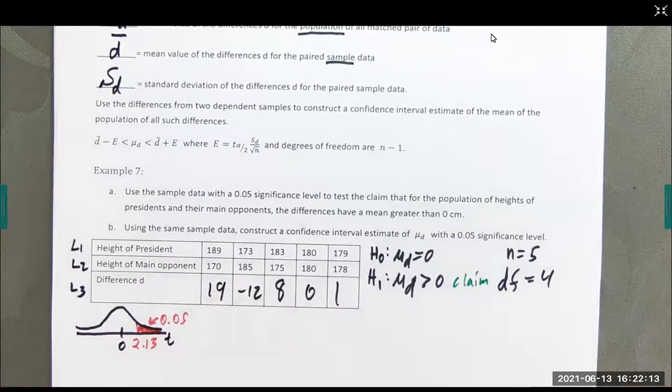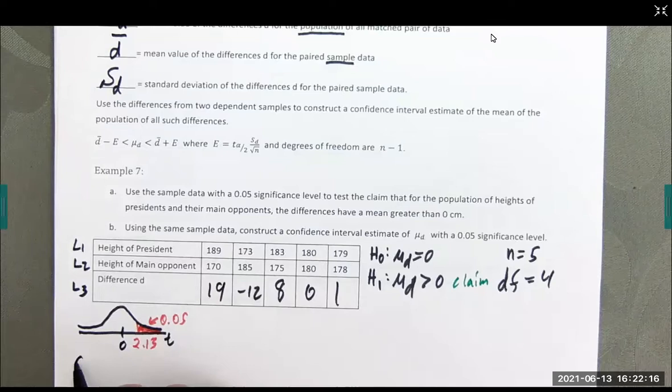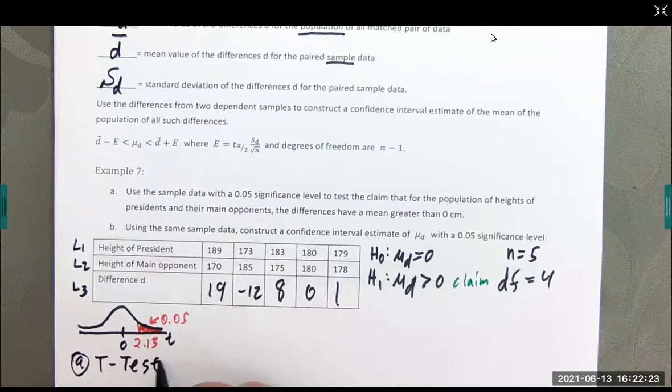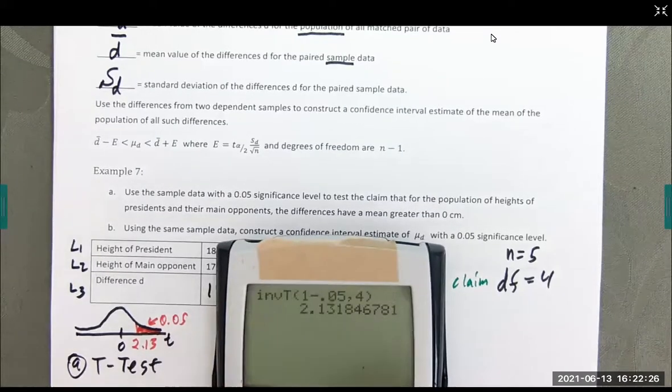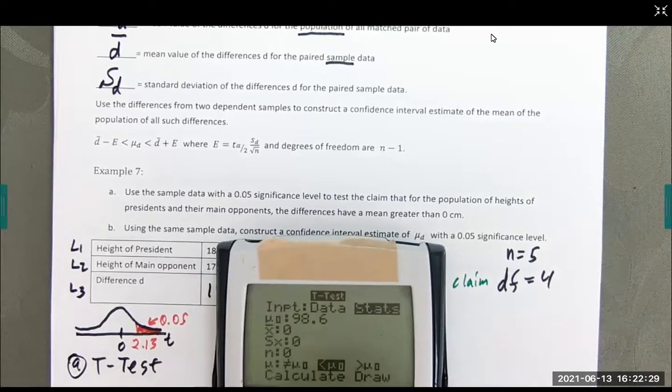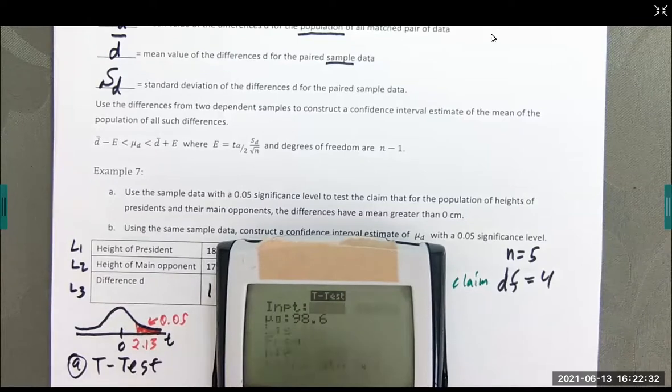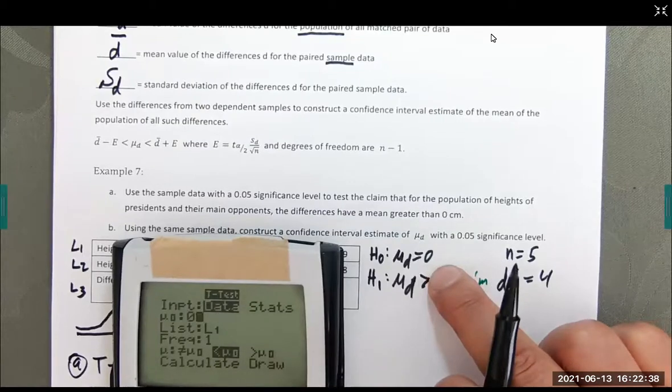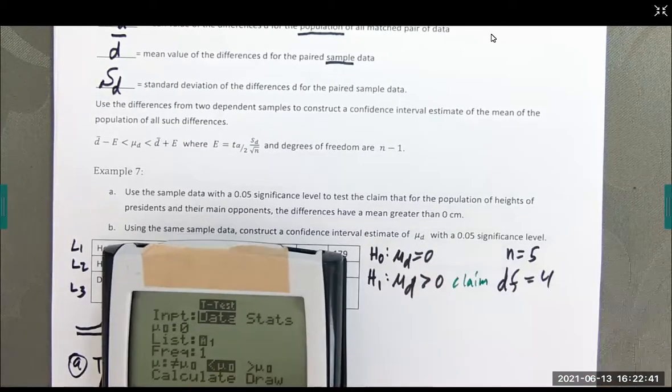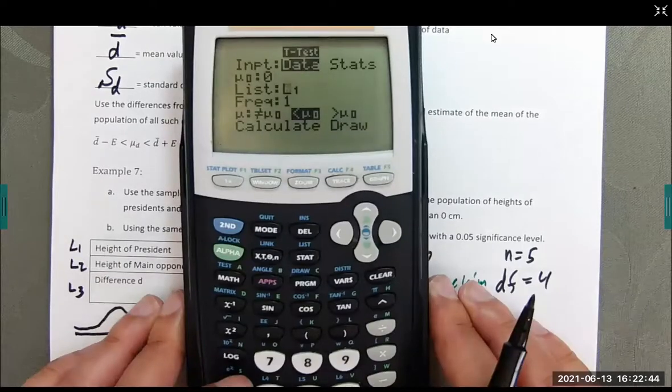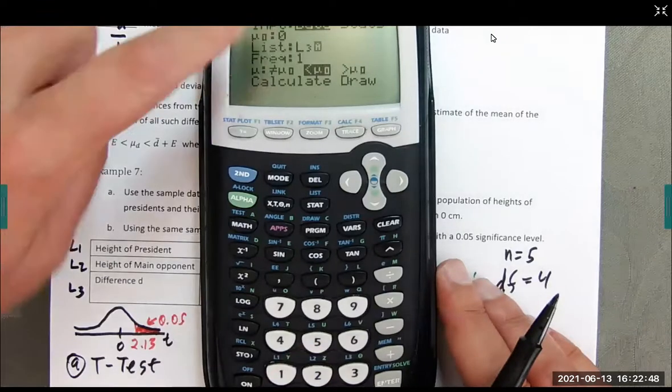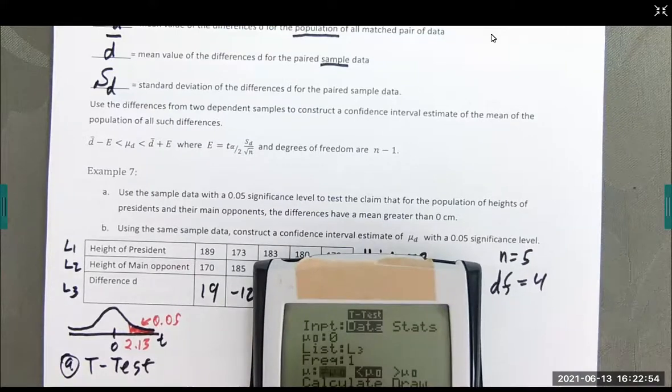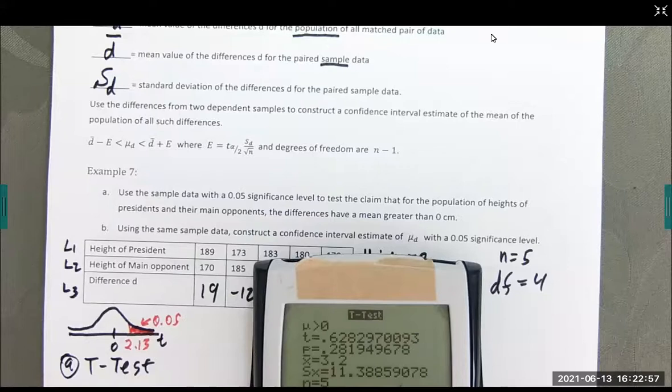Alright. So, we're just going to run a regular standard t-test. And we have data and that's going to be zero in this case. My data is in list three. So, once again, remember list three is above the three. So, second three and it changes it to L3 for me. And this one is a larger than. Then calculate. So, there is our test statistic and our p-value.